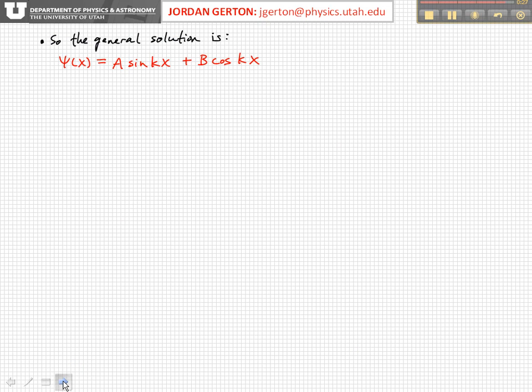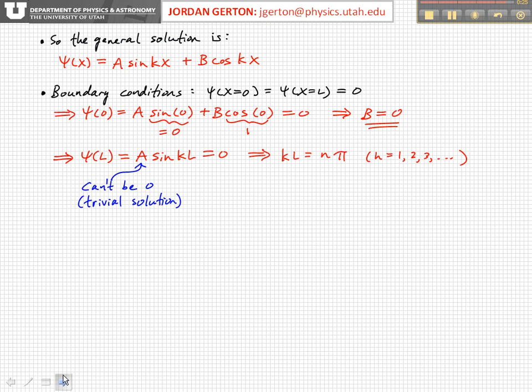Now we use boundary conditions to find the values of A and B. In particular, we know that at x equals 0, psi(0) has to equal 0, because we said that's the case. And so that means that B here has to go to 0.